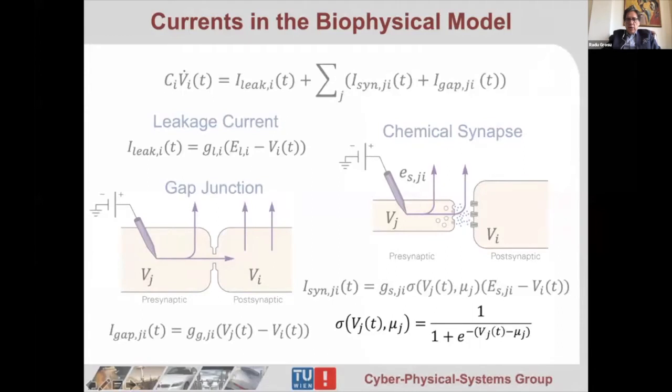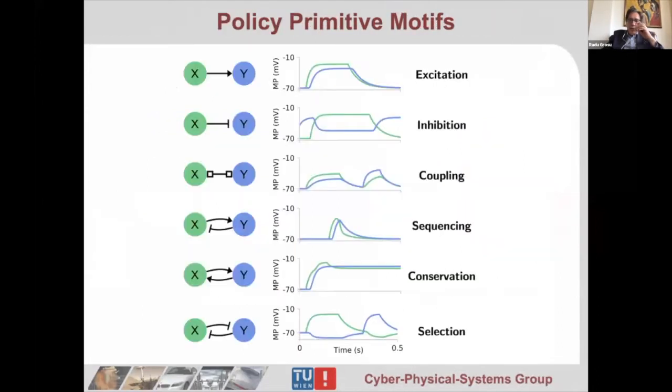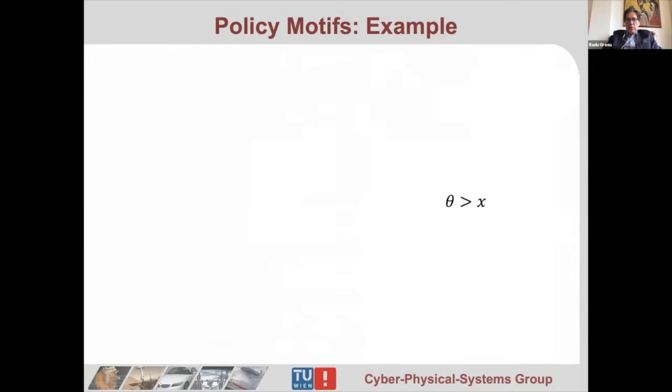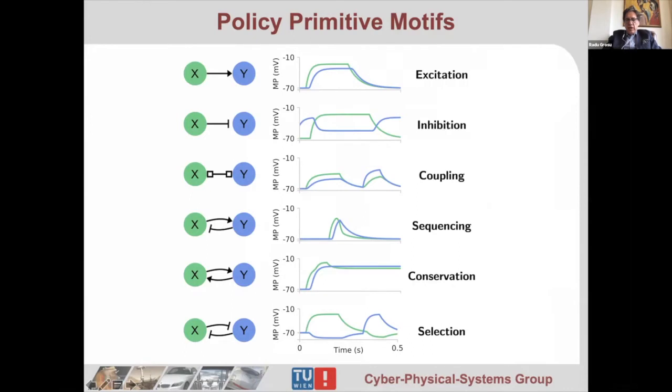What can you do with this? You can have various policy motifs, like activation and inhibition. You can have coupling when you have a gap junction between two neurons. The more interesting are the ones that correspond to feedback connections, like sequencing where you have activation and inhibition. Sequencing means x goes first and then y goes. Conservation means they behave essentially the same way—it's also a way of implementing fault tolerance. Then you have mutual exclusion or selection, so when x goes high, y goes low.